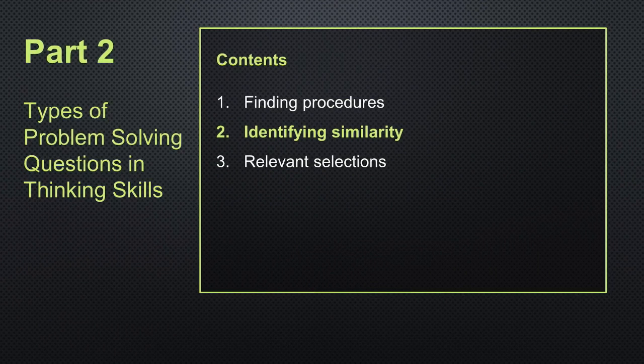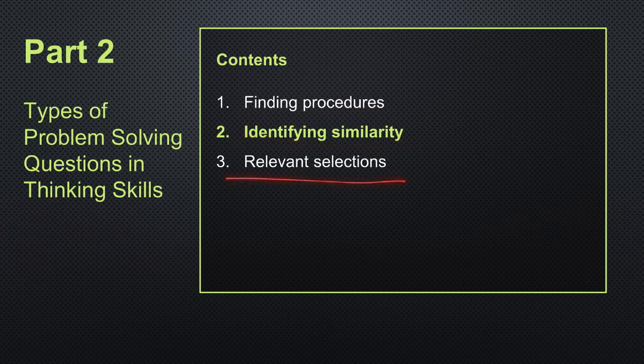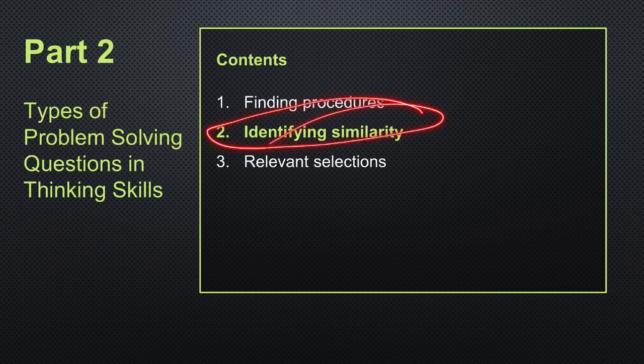There are three types of problem-solving questions in thinking skills: finding procedures, identifying similarity, and relevant selections. We will be covering identifying similarity in this lesson.